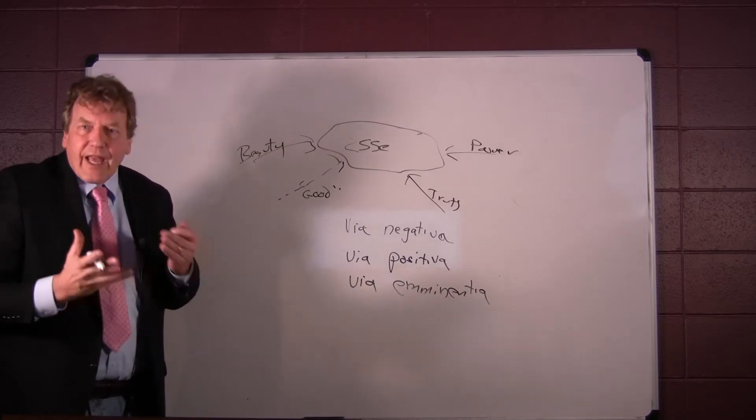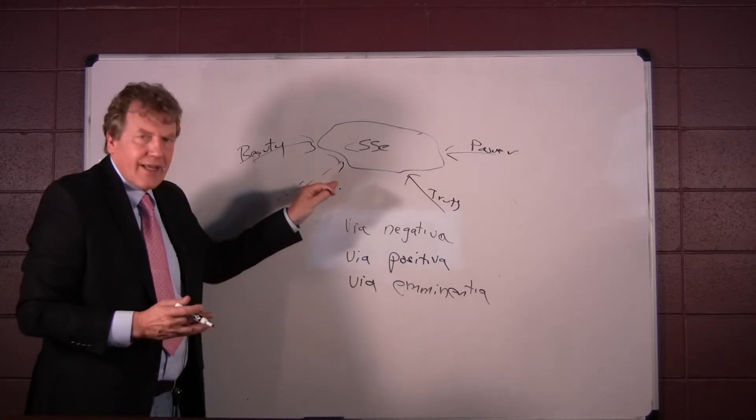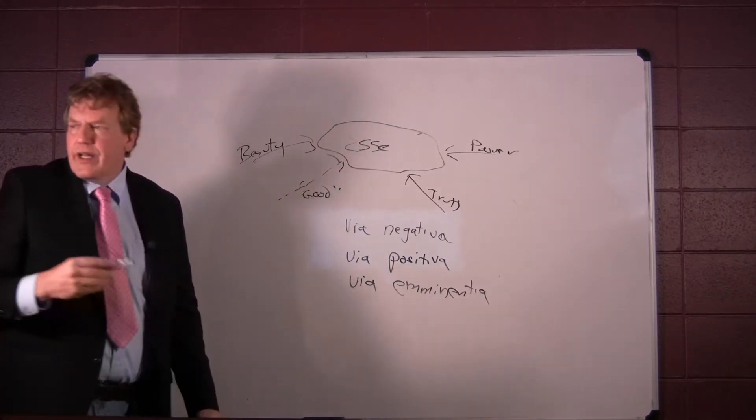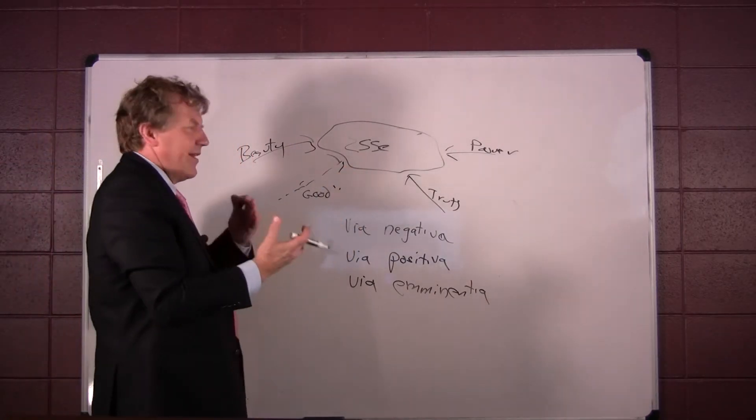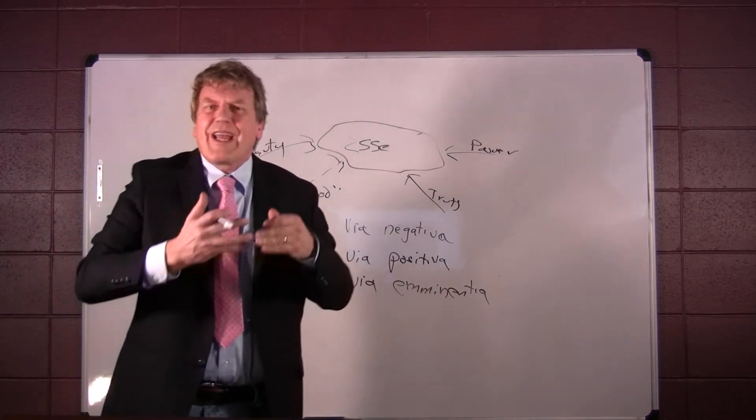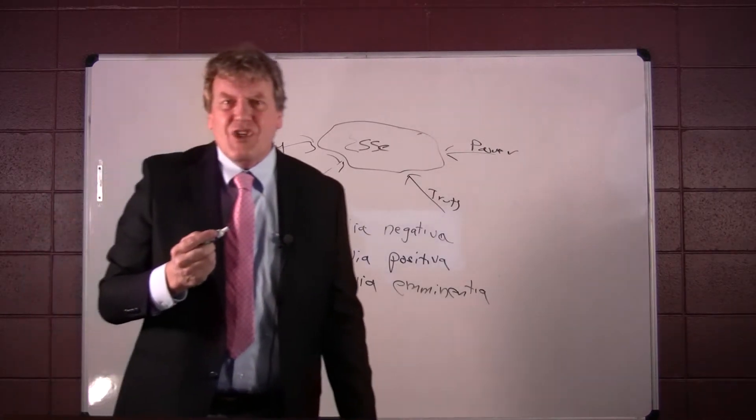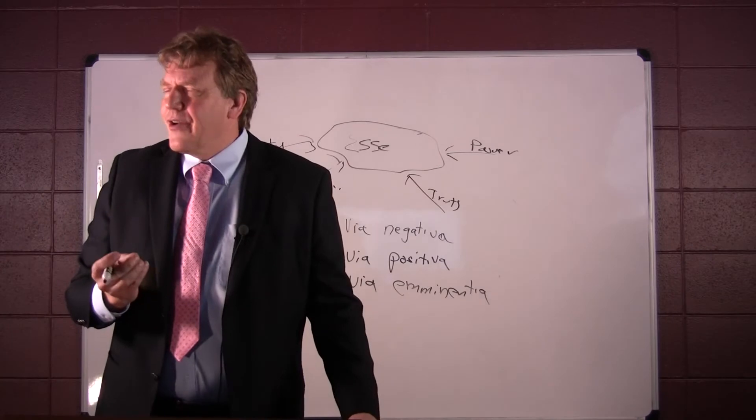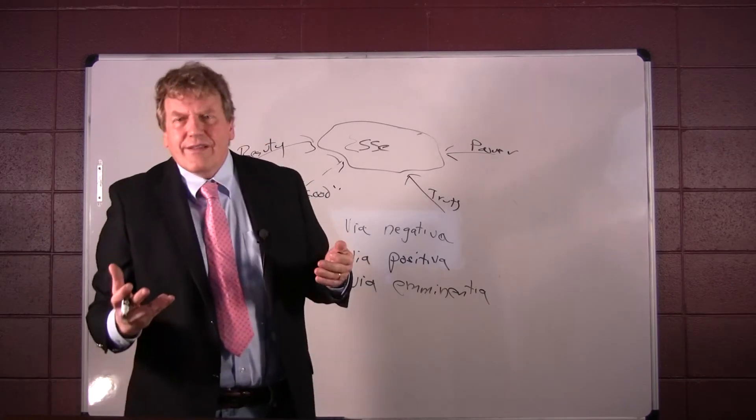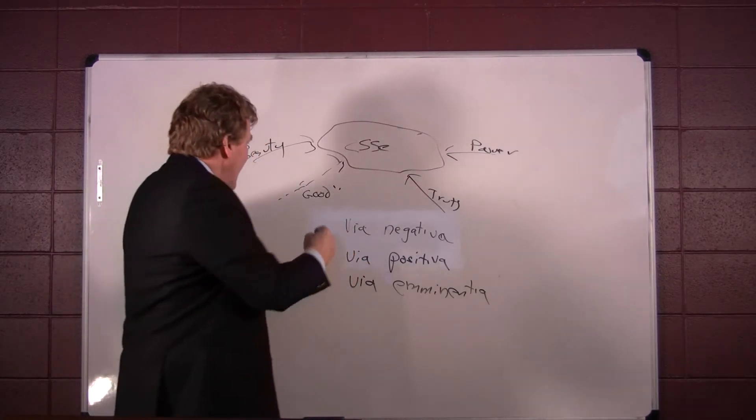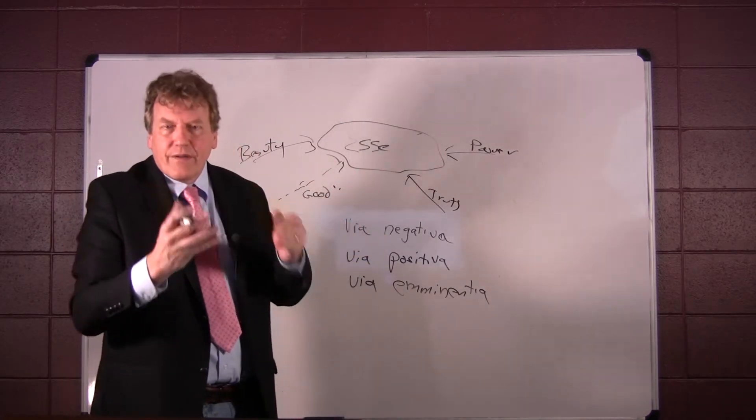So while one can predicate God positively, properly speaking, God is beyond predication, but God is more like being good than being evil, more like being true than being false, more like having power than not having power. So what we're doing is we're characterizing God through the doctrine of analogical predication. Thus, while we cannot literally think God, we can't affirm him. God gives goodness to all things. And thus, we can say that God is good, even though the goodness that God has is beyond our categories of good and evil, if you will.